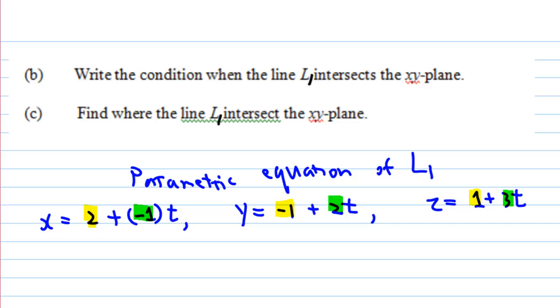Next, we are going to answer parts b and c. Write down the condition when the line L1 intersects the xy-plane, and find where the line L1 intersects the xy-plane. Earlier we found the parametric equation of L1: x = 2 - t, y = -1 + 2t, z = 1 + 3t.